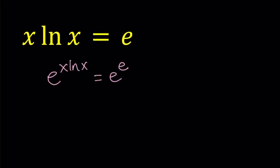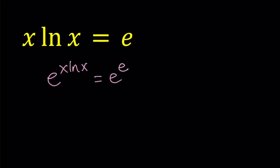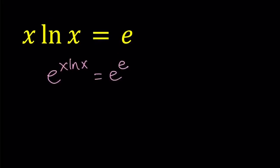e is Euler's number which is about 2.7, and Euler is a great mathematician who has done a lot of great things. We know that e to the power ln something is that thing. So like if you have e to the power ln y it can be written as y. Note that y needs to be greater than 0 in order for this to be defined, so in our case x needs to be positive.